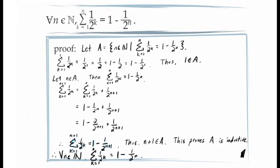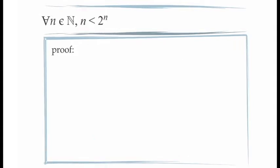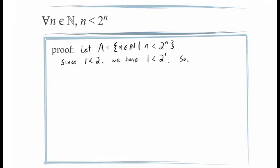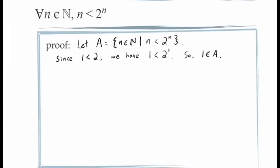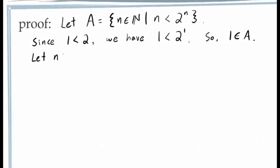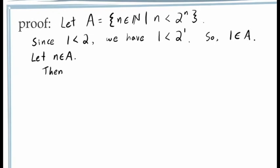Another thing we can prove is that the powers of 2 get relatively large as n gets large. Let's prove that for every n in the natural numbers, 2 to the exponent n will always be greater than n itself. Again, we're going to prove this using the principle of mathematical induction, and so we start by considering the set A of those values of n for which our inequality holds. First, since 1 is less than 2, we know that 1 is less than 2 to the exponent 1, which proves that 1 is an element in our set. Next, to prove A is an inductive set, we take an arbitrary element n in A, which means for this value of n, we have n is less than 2 to the exponent n. We're trying to prove that n plus 1 is also in the set A.